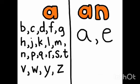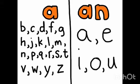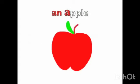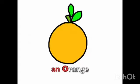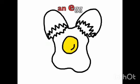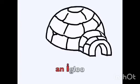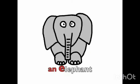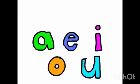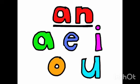With A, E, I, O, U — use AN. An apple, an orange, an umbrella, an egg, an octopus, an eagle, an elephant, an island. With A, E, I, O, U — use AN. Thank you!